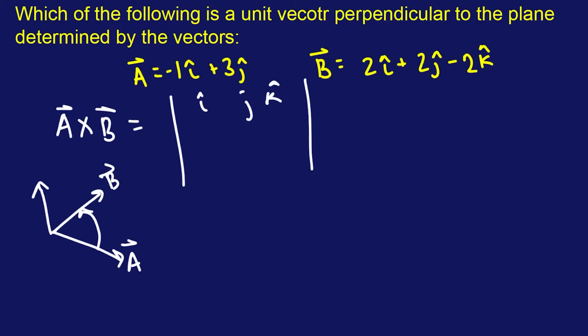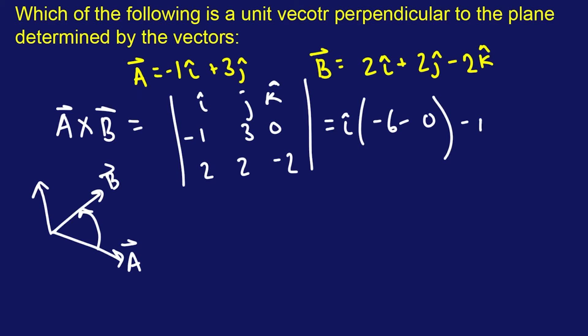And then we're going to list out the A and B components underneath. So we're going to say negative 1, 3, and 0. And then this is going to be 2, 2, negative 2. This is going to be in the I hat direction initially, so we don't look at these rows or columns. We look at this determinant here — we're going to say negative 6 minus 0. And then we're going to subtract the J hat direction, cross that out, and look at the J column — we're going to get 2 minus 0.